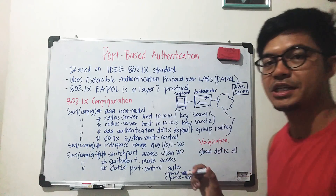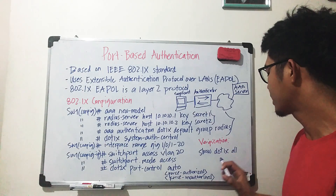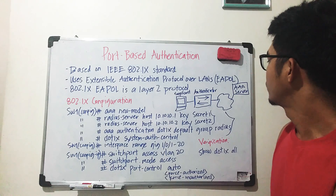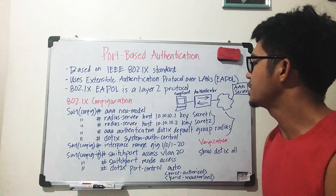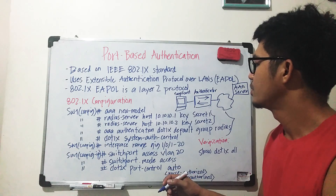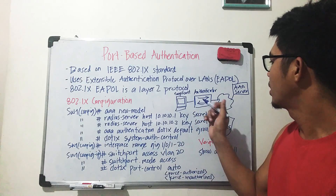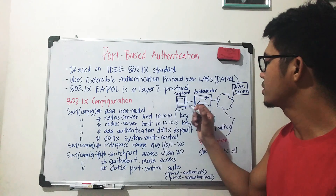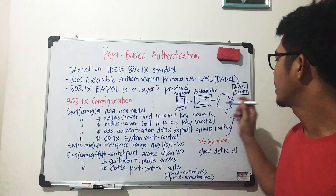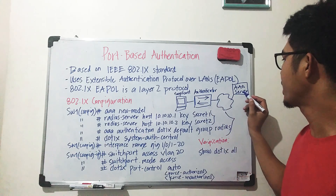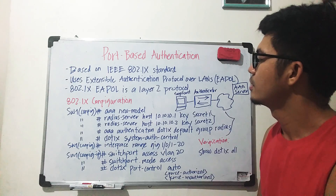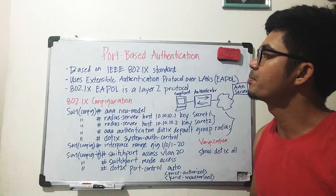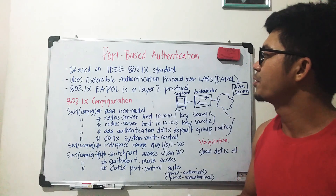For verification, you can use the command 'show dot1x all'. To emphasize the key terms: the computer is the supplicant, the switch is the authenticator, and the server is the triple-A or RADIUS server — it's important to be familiar with these terms.